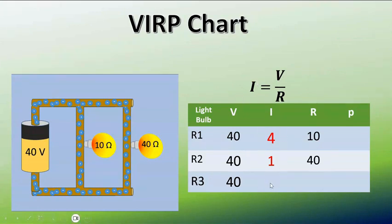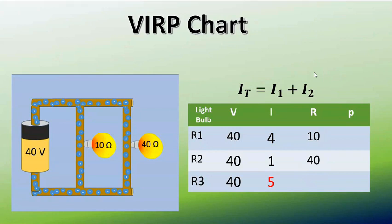Now we can add the currents together, just 4 plus 1 equals 5. Or we can add the resistors together, but if we add the resistors we have to use that formula. We have to do 1 over 10 plus 1 over 40 is equal to 1 over RT. So the easiest thing to do is add the currents together, which we're going to do there.